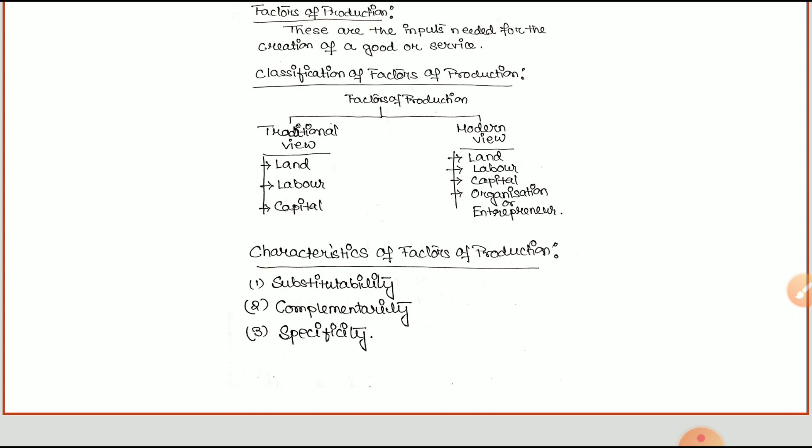Another term we use in this definition of specificity is versatility, which means the quality of adaptation by the factors of production. This means the factors of production have other features that can be adapted. For example, land is used for agricultural purposes, and apart from that, that particular land may be used for industrial purposes to set up a factory. So we can say all factors of production possess these three specific characteristics.